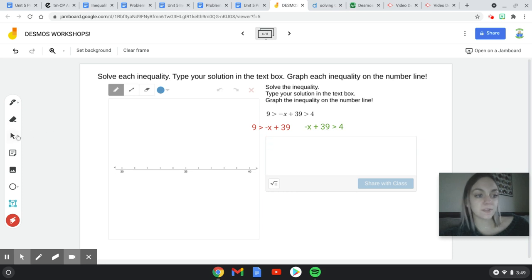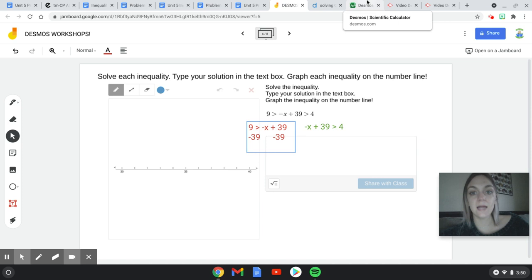And then we've seen these before. These are easy peasy. So the first thing that I need to do is get x by itself. So I'm going to have to get rid of this positive 39, which means I need to subtract 39 from both sides. So if Desmos Scientific Calculator is not up yet, go ahead and pull it up.